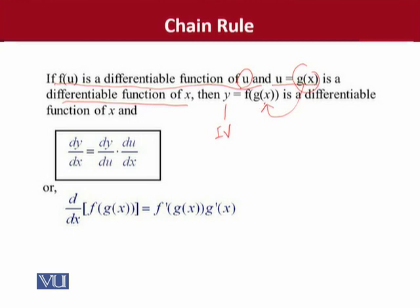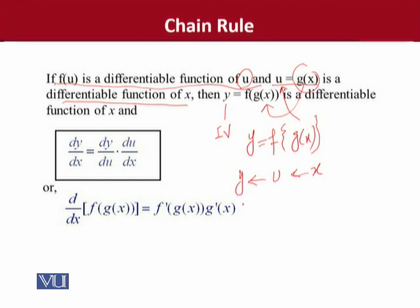Now, we can see that there is a function of x with more complexity involved. Whereas when we were dealing with two variables, now we are dealing with three variables. Let me make a very simple framework for that — this is a function of x, and we can see that there are three variables involved in it.